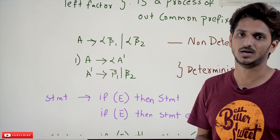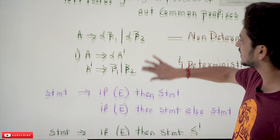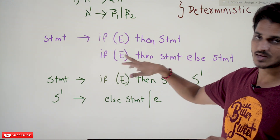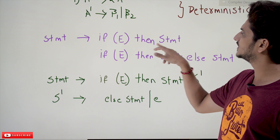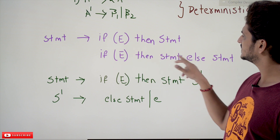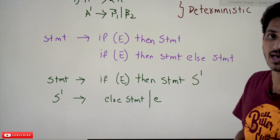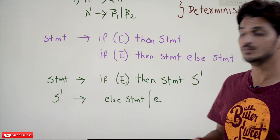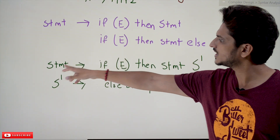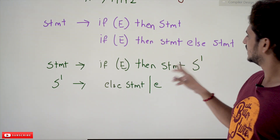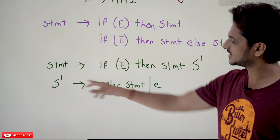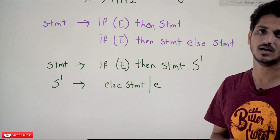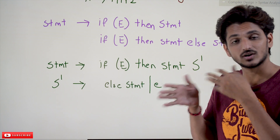Let's come to our previous example — the dangling else problem. This is the ambiguous grammar: statement tends to 'if expression then statement' or 'if expression then statement else statement'. The common prefix here is 'if expression then statement'. To eliminate this using left factoring: statement tends to 'if expression then statement S-dash', and S-dash tends to 'else statement' or epsilon. This gives us a deterministic context-free grammar with no non-determinism.